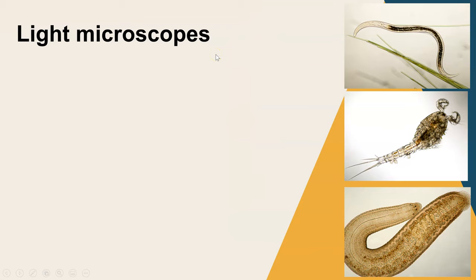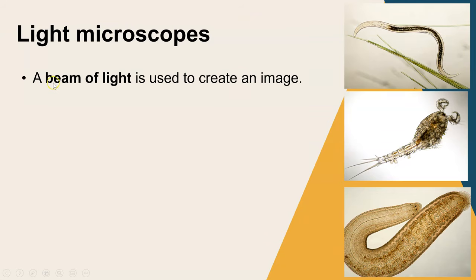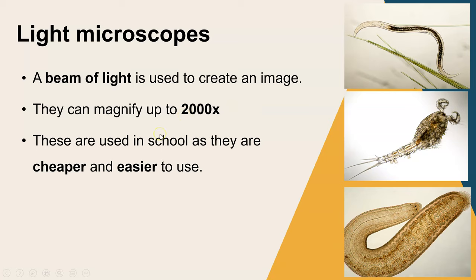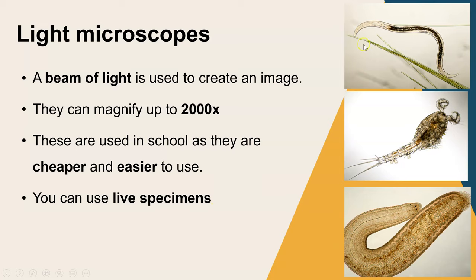Looking at some of the properties of light microscopes: the way they work is a beam of light is used to create the image. They can magnify up to 2,000 times, meaning whatever you're looking at can be viewed 2,000 times bigger. That's the microscope you'll be using in school — they're much cheaper and much easier to use. With the light microscope you can actually view living and non-living specimens. In the top diagram we have a live nematode worm, and at the bottom this is actually a live leech.